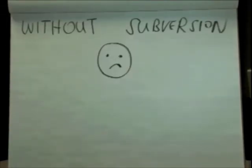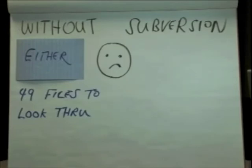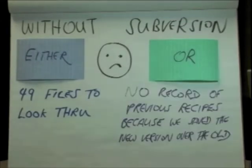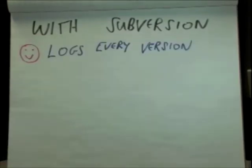If we haven't been using Subversion, finding our chocolate chip recipe could be a real ordeal. Either we have 49 separate versions of the recipe to look through, because we saved each version as a separate file because we were organised, or we have no idea what previous recipes said, because each time we change the recipe, we simply save the new version over the old version. But, if we'd been using Subversion, we have a record of every version, together with a message that says what's changed from one version to the next.